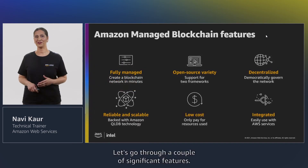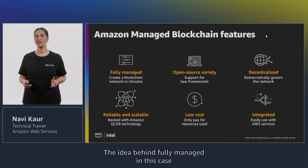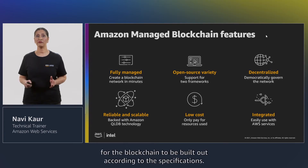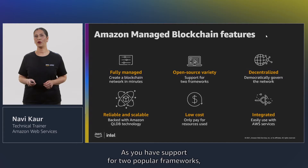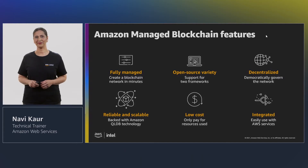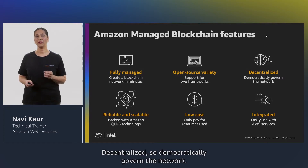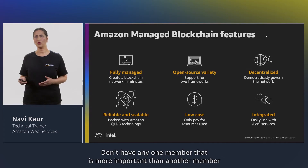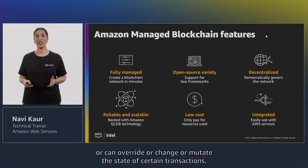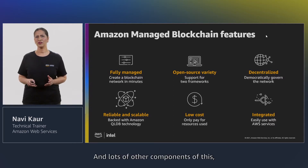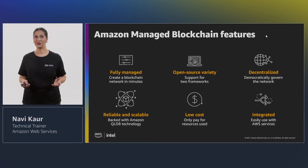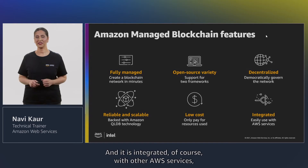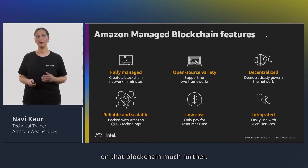Let's go through a couple of significant features. Fully managed — you don't need to wait weeks for the blockchain to be built; you can create a blockchain network in a matter of minutes. Open source variety — support for two popular frameworks: Hyperledger Fabric and Ethereum. Decentralized — democratically govern the network, with no one member able to override or mutate the state of transactions. And a familiar pay-as-you-go cost structure, only paying for resources being used, integrated with other AWS services so you can take development on that blockchain much further.